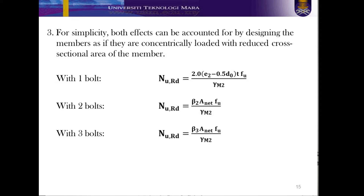Here are the simplified equations produced in the code to include the effect of eccentricity. If you have eccentricity and more than one bolt — two or three bolts — you need to refer to these equations when calculating the ultimate resistance. In our case, because we have two bolts, we use the equation: NURD = β2 × A_net × FU / γM2.